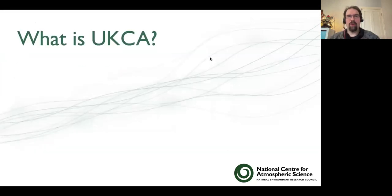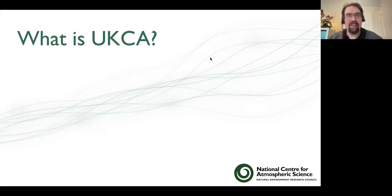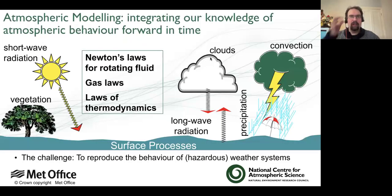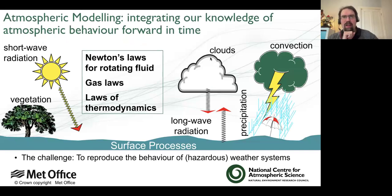So the first thing to talk about is: what exactly is UKCA? Some people may be more familiar, some people might not. UKCA is part of an atmospheric model - it's part of the Met Office atmospheric model. These models aim to solve and integrate the knowledge of our atmosphere forward in time so we can understand hazardous weather systems, climate patterns, and all this sort of stuff.